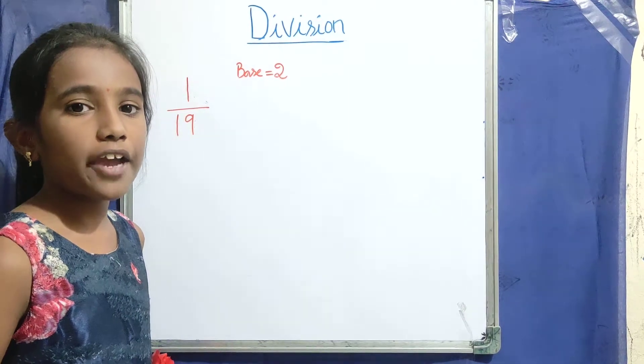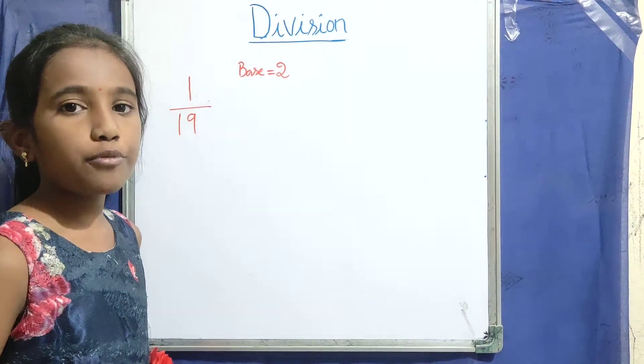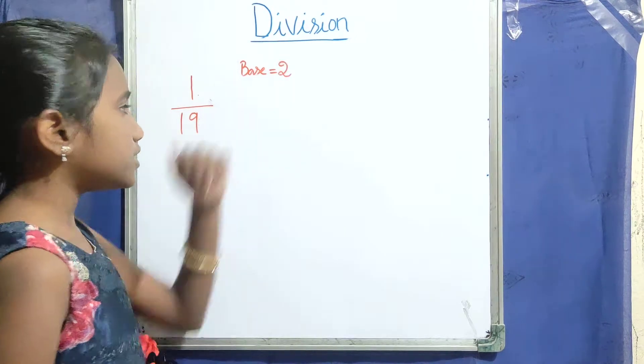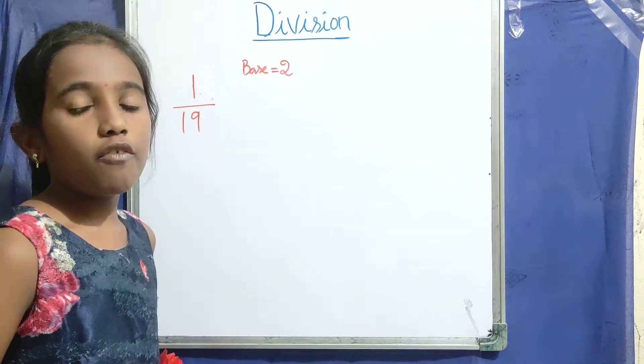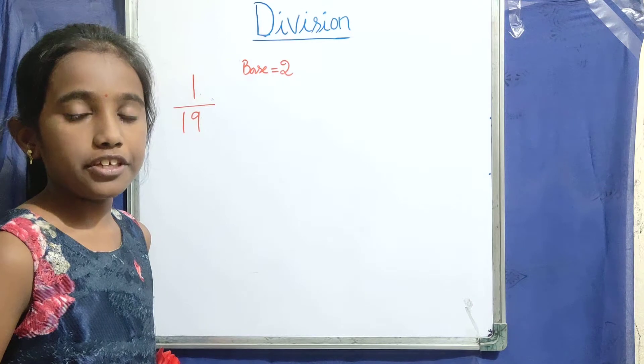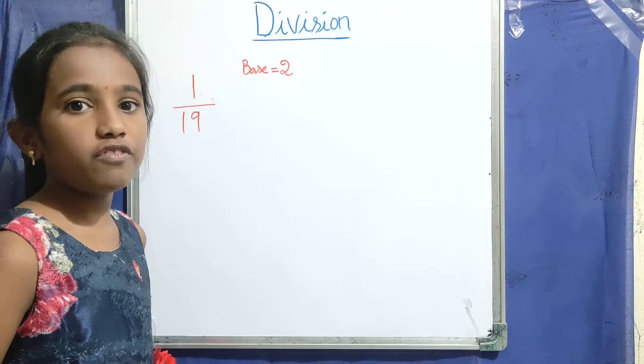Hi friends, welcome to our channel. My name is Purvi. Today I am going to present you the division 1 by 19. Whenever the denominator ends with 9, the question should always end with 1.